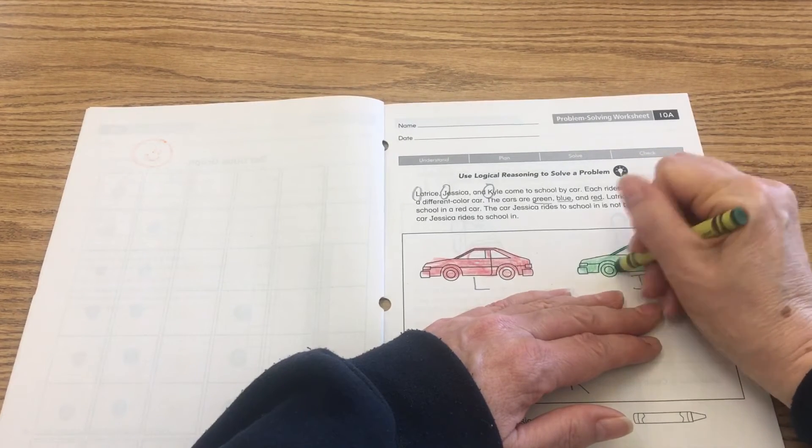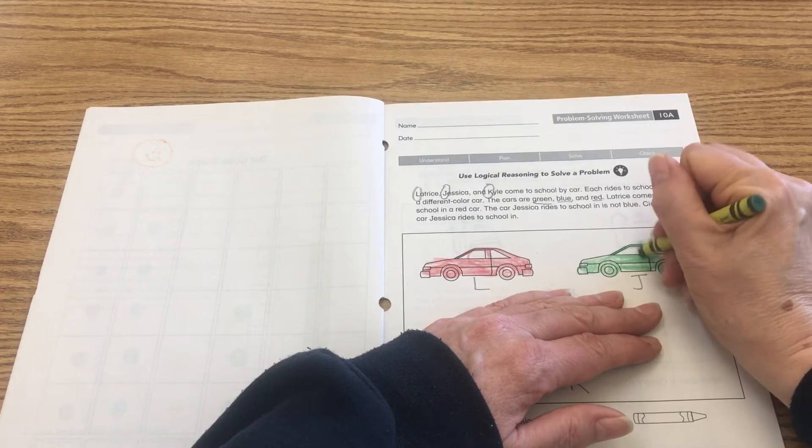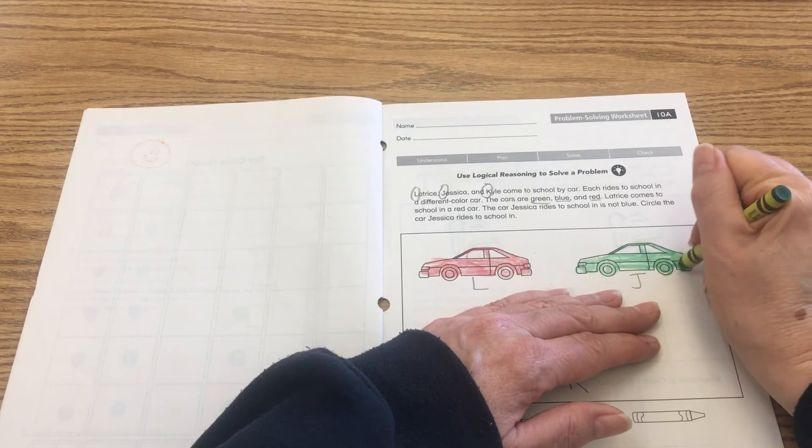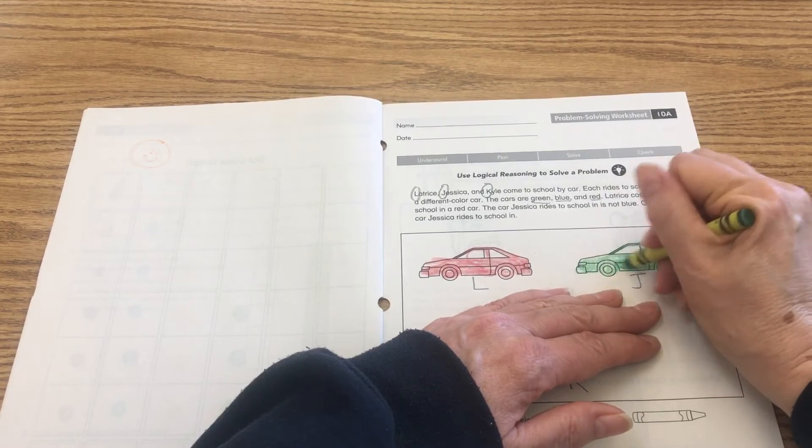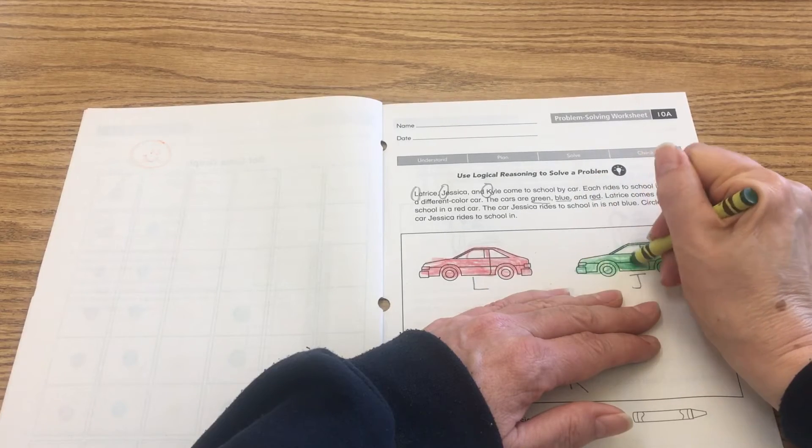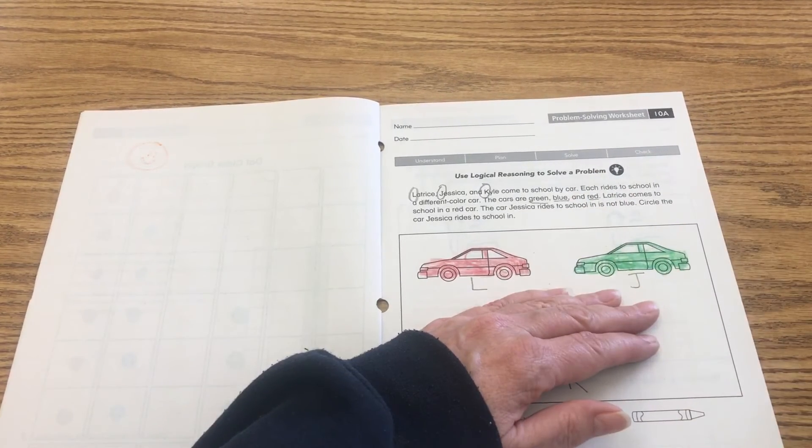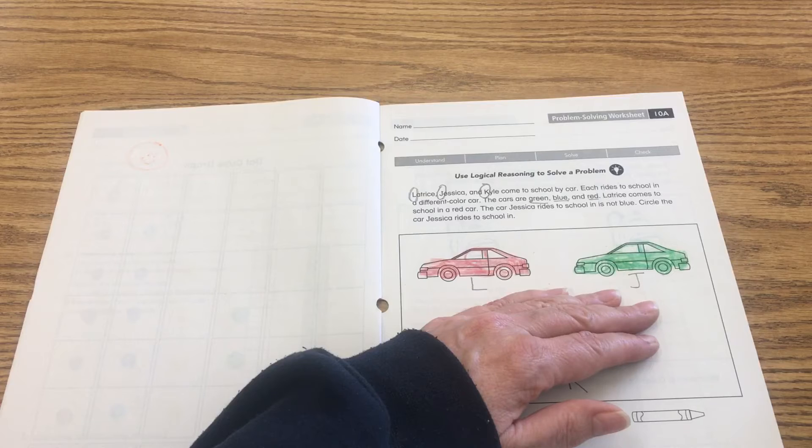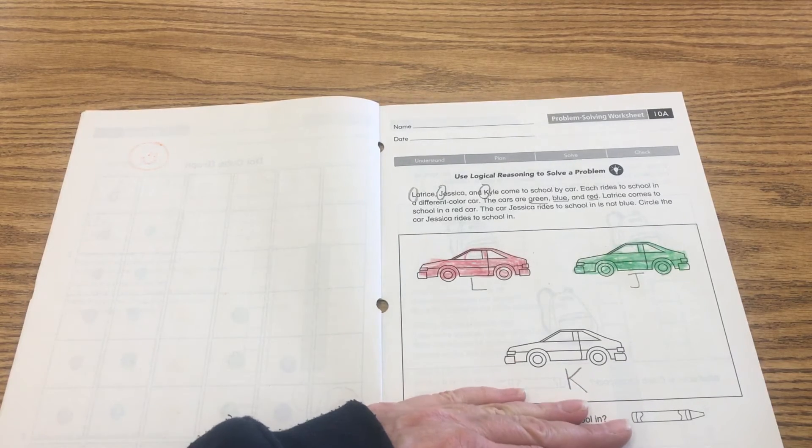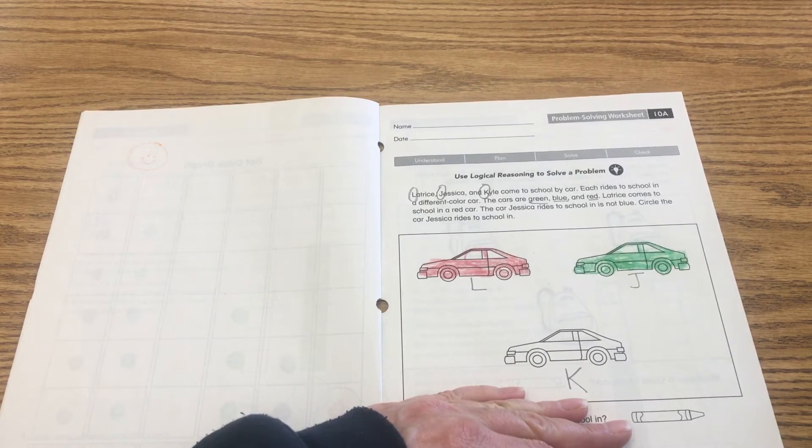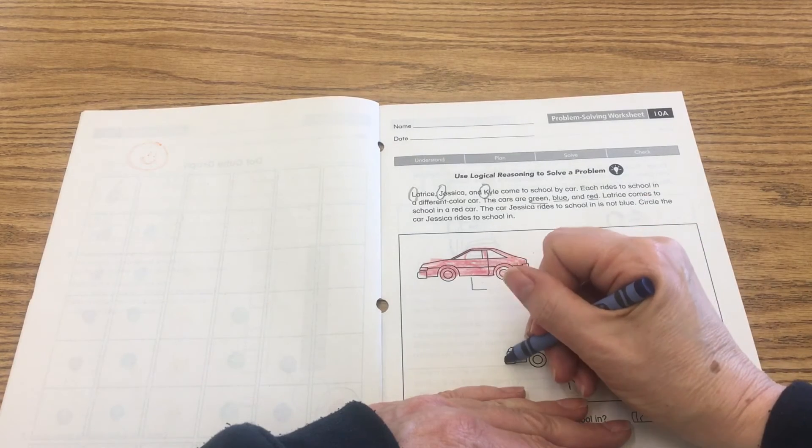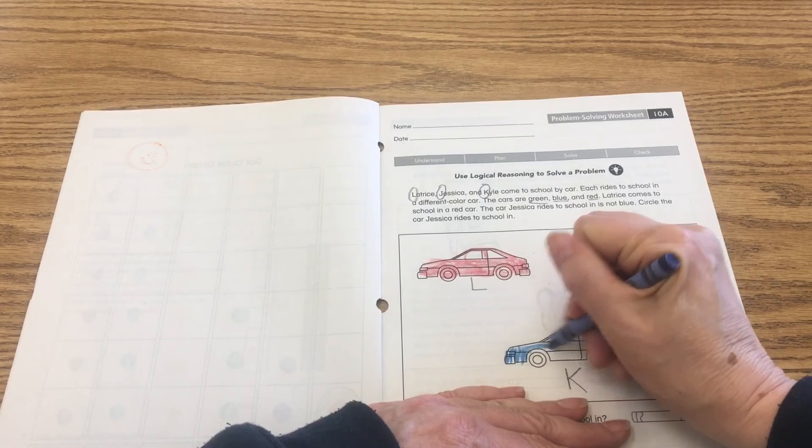So that's a clue by saying what it's not. It's not red, it's not blue, so the only other color left we have to color with is the green one. That means that Kyle comes to school in the blue car, so you're going to find your blue crayon and go ahead and color Kyle's car.